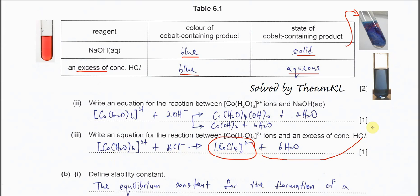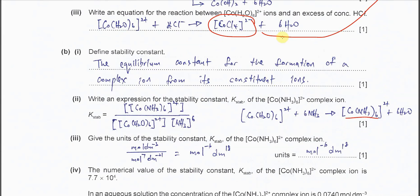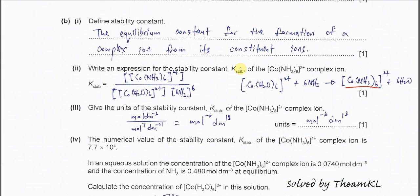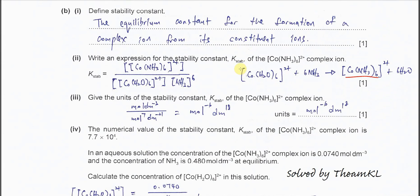Part B1: define stability constant. This one is very easy. The equilibrium constant for the formation of a complex ion from its constituent ions. Let's use this example: the complex ion that forms is this one, and we want to know how stable this complex ion is compared to the hexa aqua cobalt-2 ion.